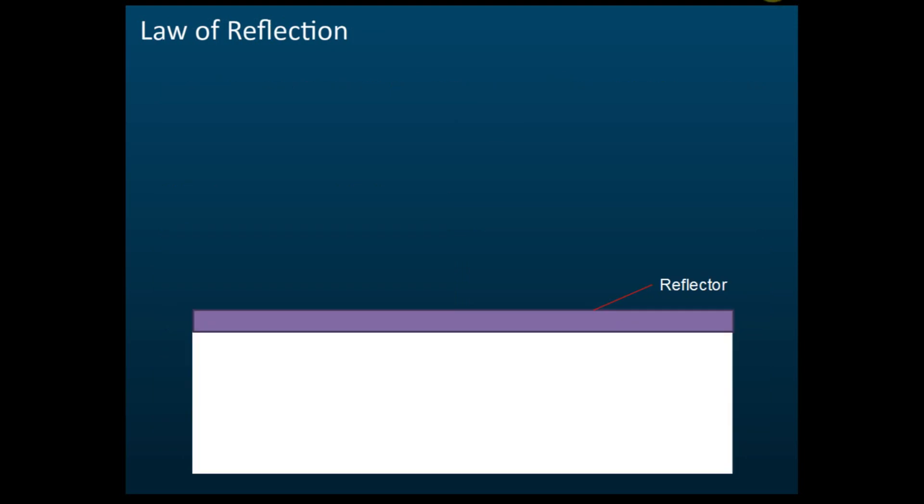Law of Reflection. The diagrams in this chapter are different from the diagrams in light. In light, we use straight lines to represent light. We say this is light. This is called a light ray.